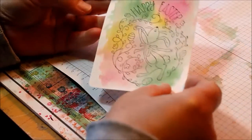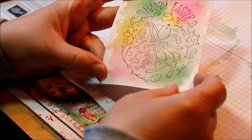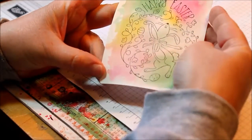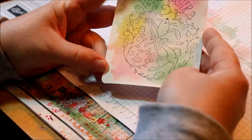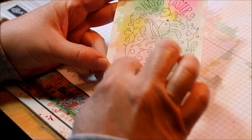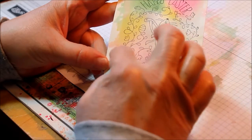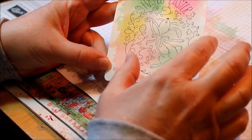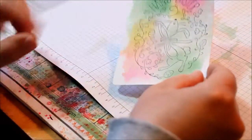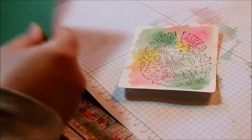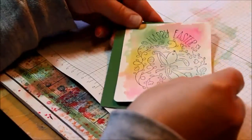So once you have it dry you end up with this cute Easter Bunny with the swirly watercolors behind him. Now it also works really well if you, rather than using the StazOn, if you use Versamark ink and embossing powder and then emboss the bunny or whatever image you're using.